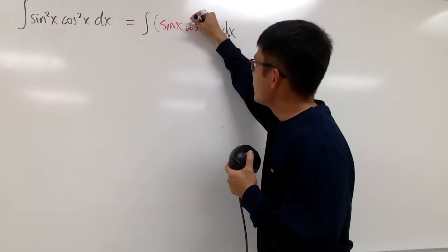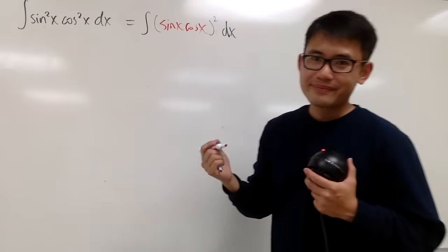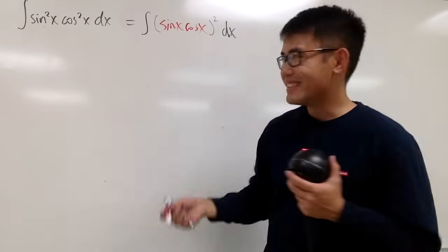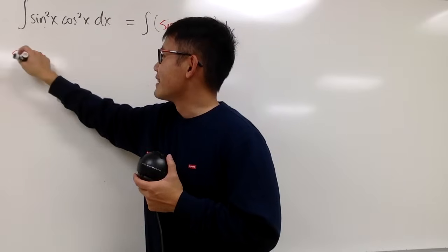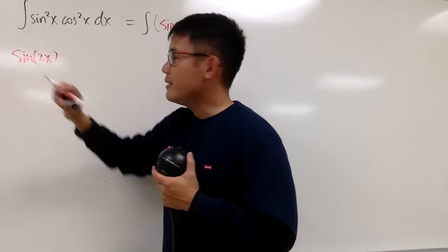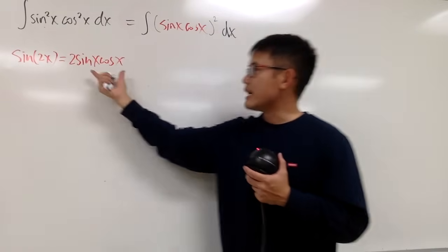And the reason I want to do this is because when we have sine x times cosine x, I think this is something that we can recognize, isn't it? Which one is it? All right. It's the double angle identity.